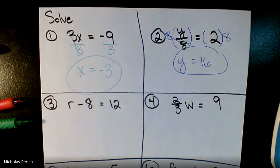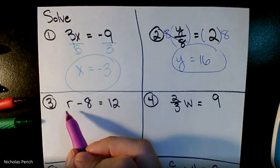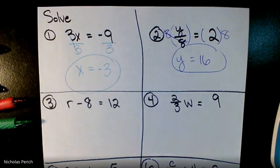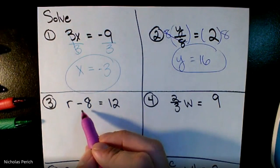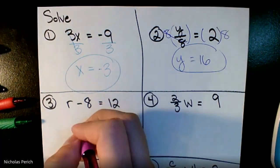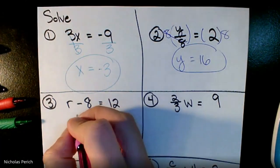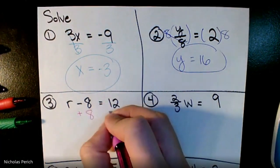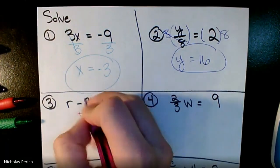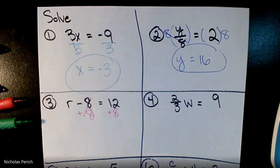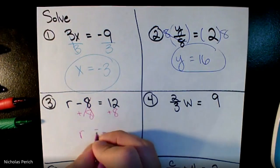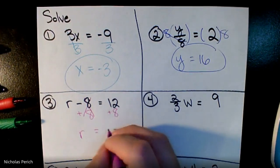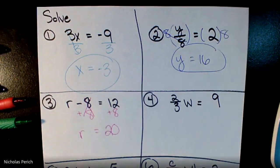Is r all by itself? No — what's in the way is minus eight. How do I get rid of minus eight? Do the opposite: add eight. Add eight to both sides, cross it out. r equals 12 plus 8, which is 20. Is r all by itself now? Yes.